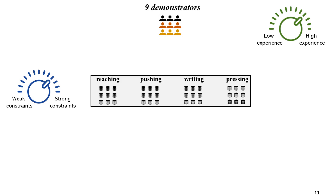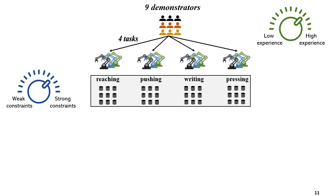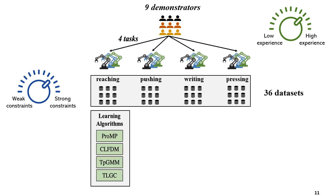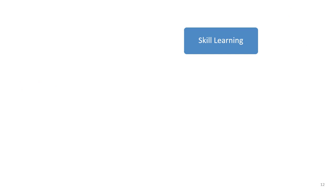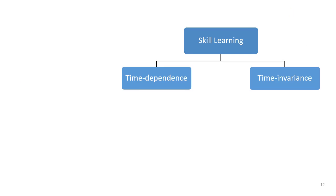Some demonstrators had low experience with no experience in robotics at all, while others had previously experienced learning from demonstration and had provided demonstrations to the robot. These nine demonstrators provided multiple demonstrations for each task, and overall we collected 36 task datasets. The next stage was to select the algorithms to evaluate in this benchmarking study. We selected four algorithms from a broad spectrum of existing learning from demonstration approaches. We observed that existing skill learning approaches can be broadly categorized into two categories: time dependent approaches and time invariant approaches.